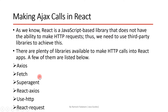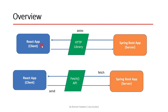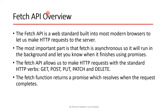Looking at the diagram here: in the previous video we created a Spring Boot application on the server side and exposed a simple REST API. We created a React application as a client to consume that REST API, and used Axios HTTP library to make the REST API call. In this video we are going to see how to use Fetch API instead to make a REST API call in React applications.